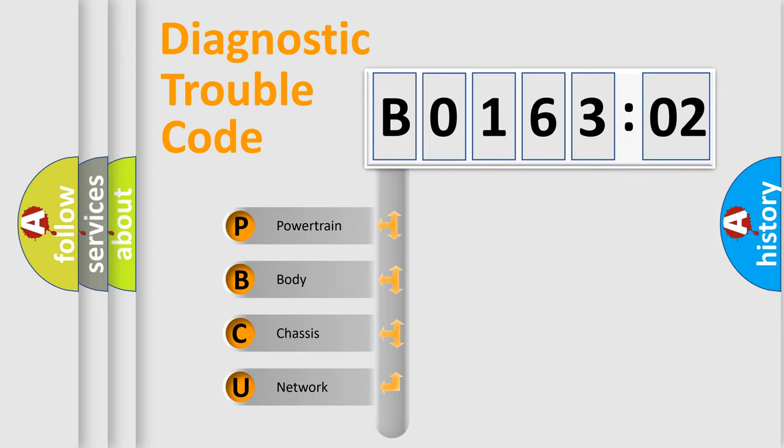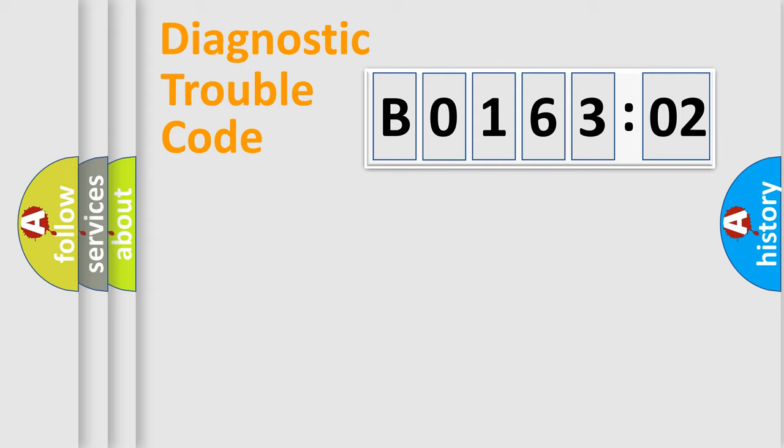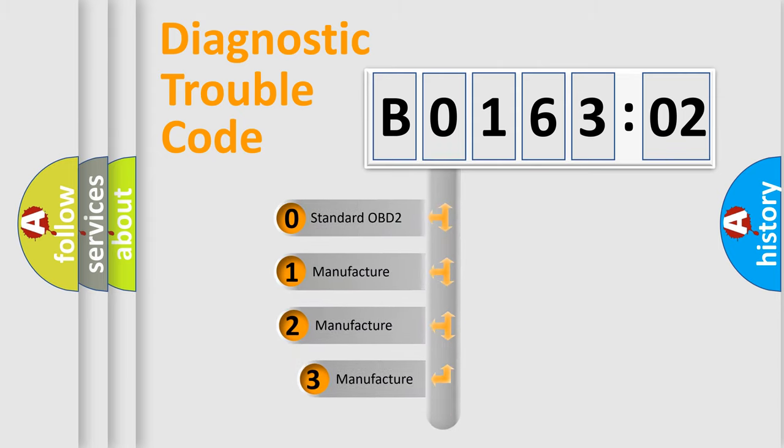We divide the electric system of automobile into four basic units: Powertrain, Body, Chassis, and Network. This distribution is defined in the first character code.